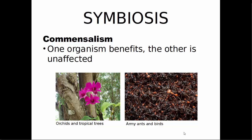Army ants and birds in the tropical rainforest also have a commensal relationship. Army ants are large populations of very aggressive ants that go on raids on the rainforest floor. When they do that, they kick up debris, dust, and insects living on the floor, which fly up as the ants raid. Certain species of birds have learned to follow army ants and eat the insects that fly up. So the birds are benefiting and the ants are largely unaffected.